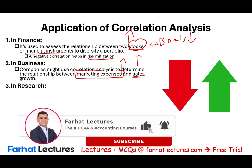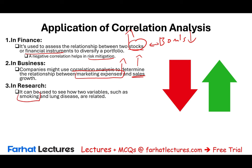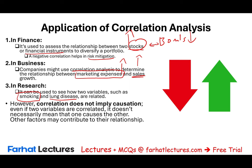Correlation can also be used in research to see how two variables such as smoking and lung disease are related. If people are smoking and many of them are having lung disease, maybe there's a correlation between the two. Bear in mind, correlation does not imply causation — even if two variables are correlated, it does not necessarily mean that one causes the other. Other factors may contribute to their relationship. All we are doing is looking at two variables.